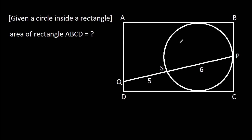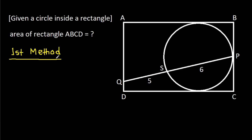In this video, we have been given a circle inside a rectangle, and PS is 6, QS is 5. We have to find the area of rectangle ABCD. For the first method, suppose AB is A and BC is B.